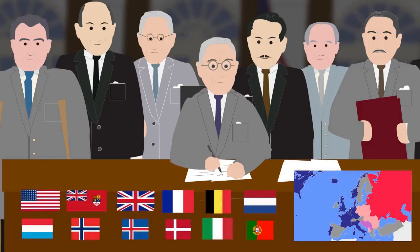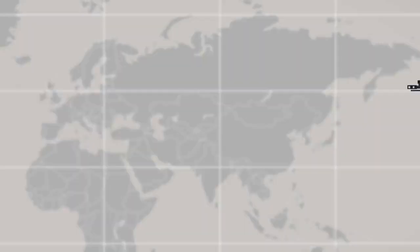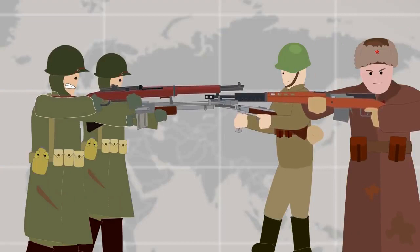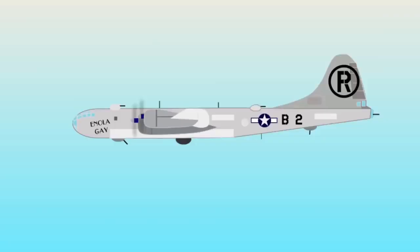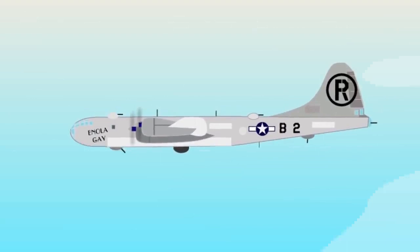NATO is an anti-communist pact — the communist and capitalist sides would be controlled by the government. In 1948, the Treaty of Brussels was signed. In 1949, the North Atlantic Treaty was signed.